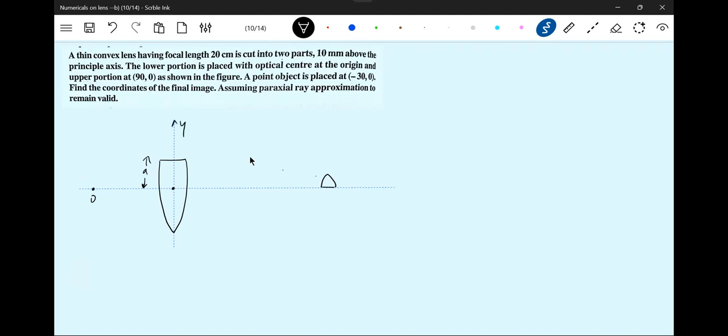This is the y-axis, this is 90 centimeters, this is 30 centimeters. If you cut it, focal length will remain the same. What is the focal length of this? It will have the same focal length. Focal length of the lens will not change.